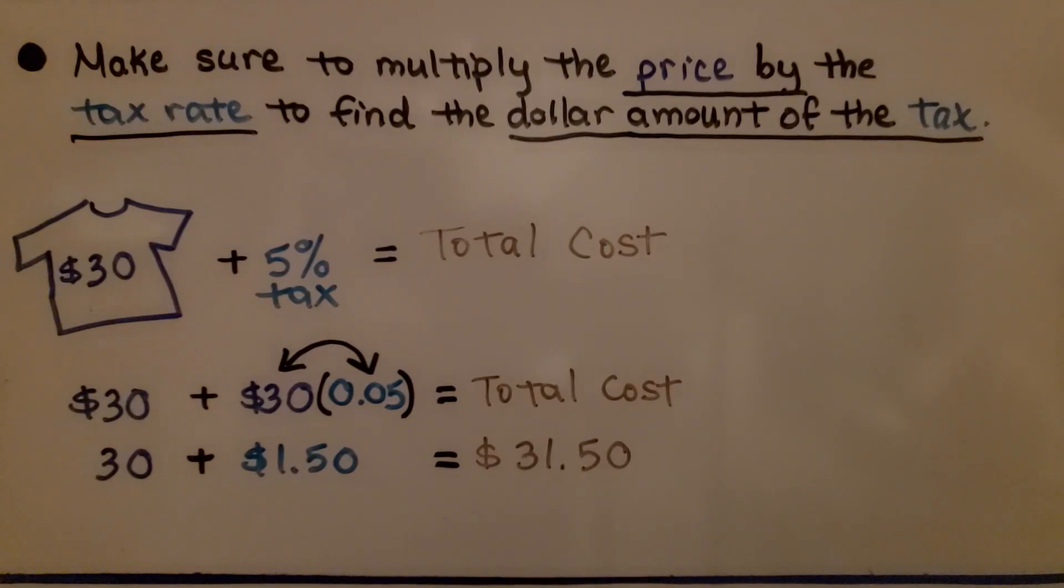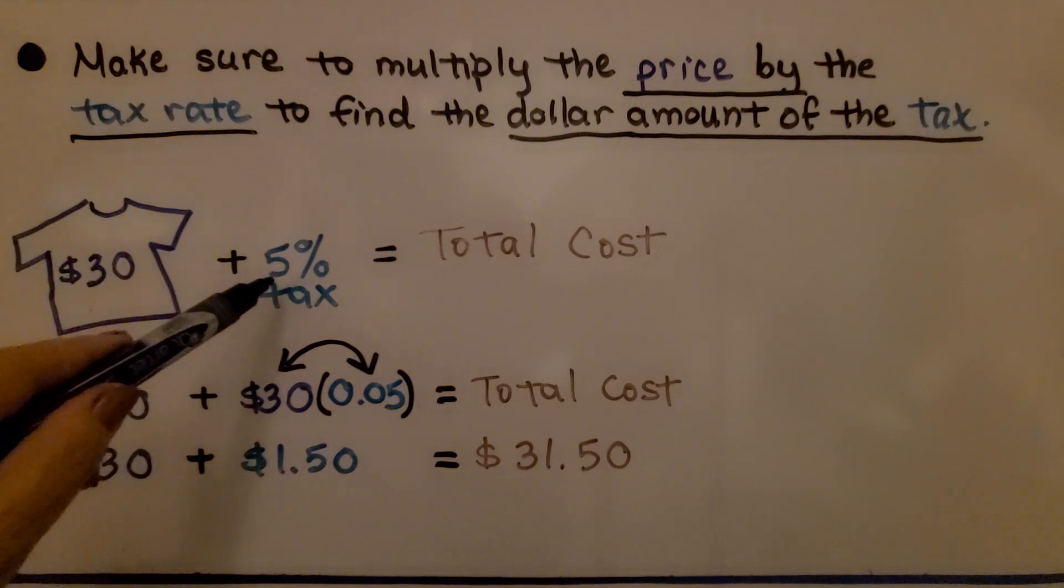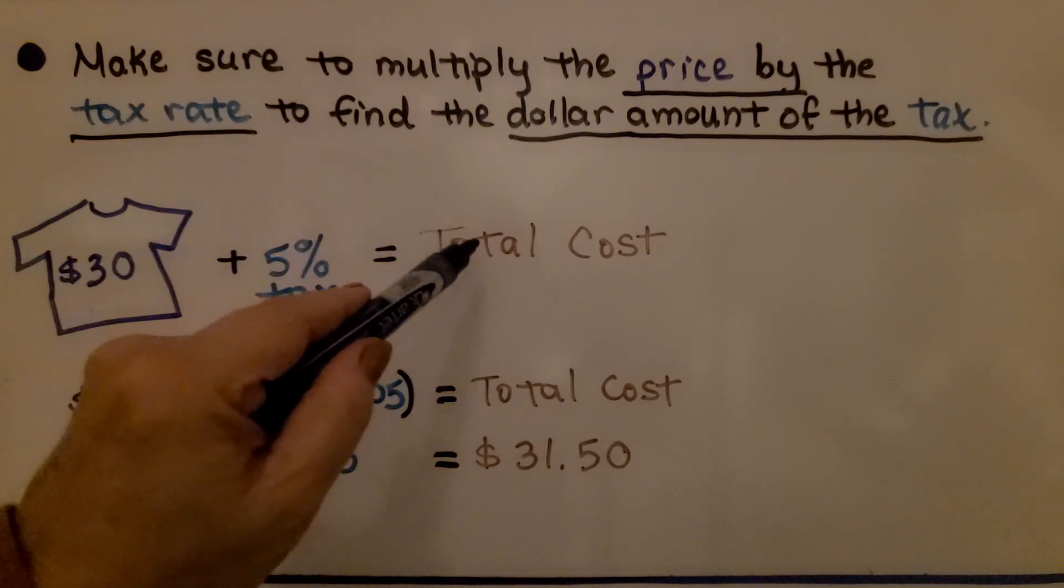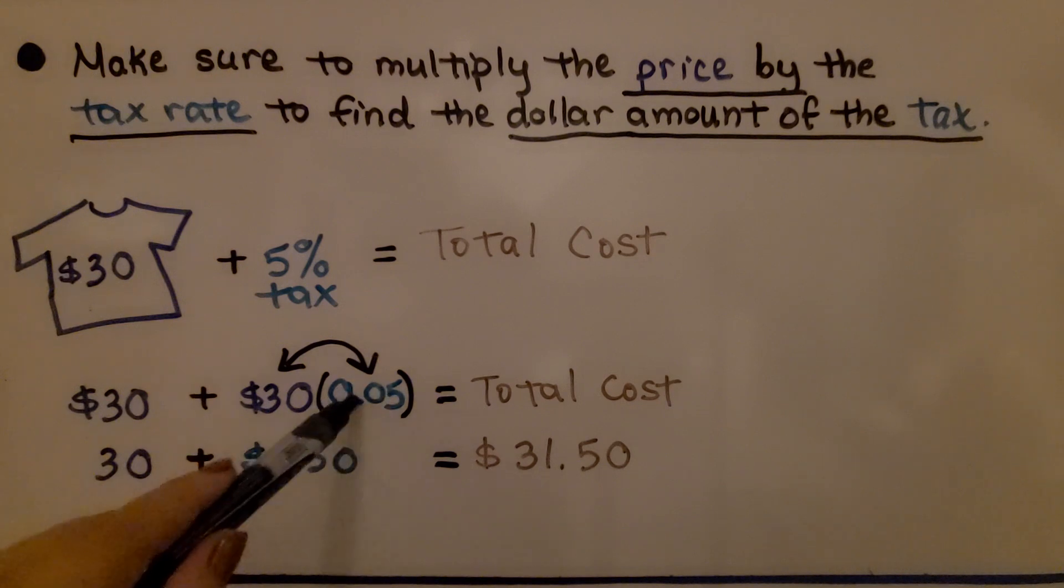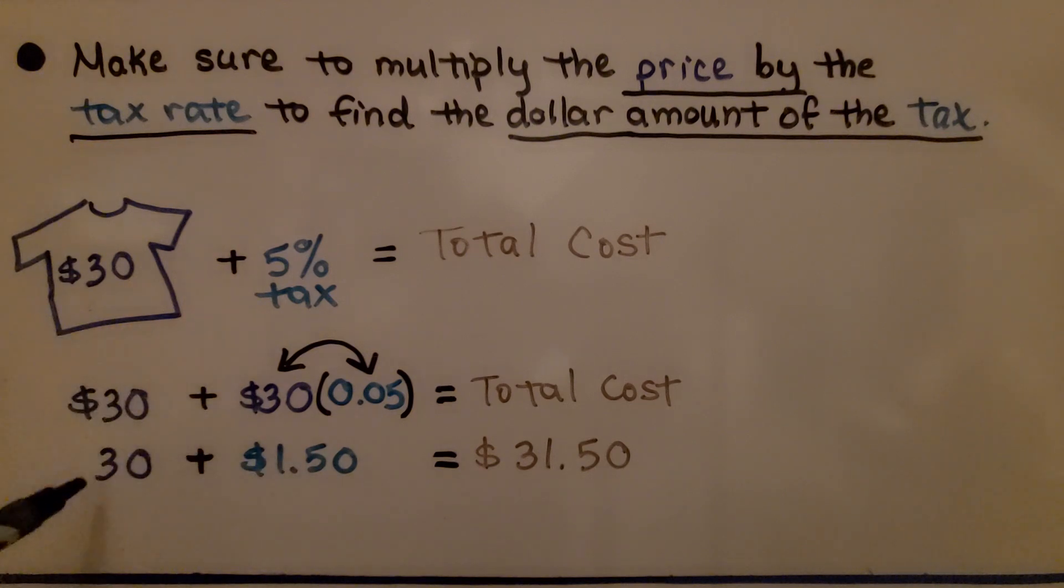Make sure to multiply the price by the tax rate to find the dollar amount of the tax. If we have a $30 shirt plus a 5% tax, when we put these together, we're going to get the total cost. We do $30 plus $30 times 0.05. That's 5% written as a decimal. We multiply the price of the shirt times the percentage of tax written as a decimal. We get $1.50. We add the original amount of the shirt to that 5% tax amount of $1.50, and the total cost is $31.50.